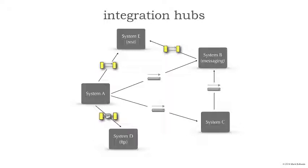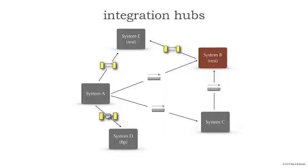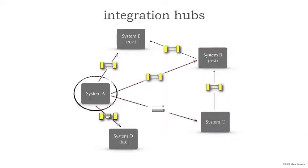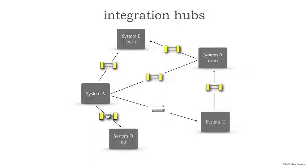Let's analyze if we really need an integration hub here, because watch what happens. System B chooses to go to REST instead of messaging. Now that's a simple protocol change, but because everything is tightly bound, system A has to be modified to communicate to system B through REST, and so does system C. So one simple change — moving from messaging to REST — has implications across our entire system. Furthermore, notice the tight coupling between every system. If system E, B, C, or D change, it's going to require a change to system A. This whole topology is highly tightly coupled.